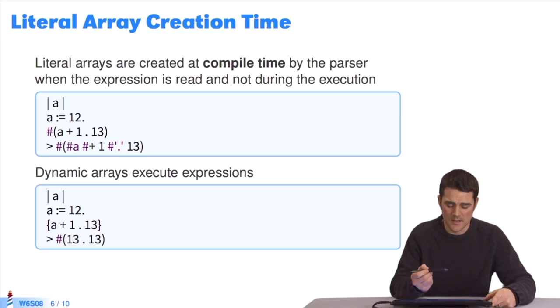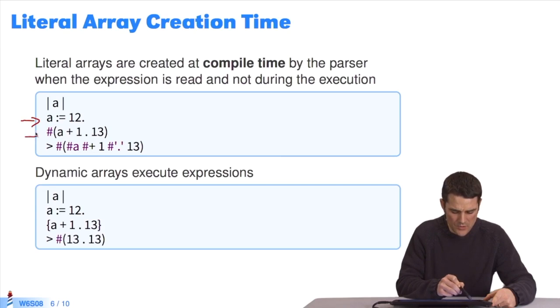The big difference between a literal array and an array created dynamically with braces. If I take the expression, here's an example. I take a variable and initialize it at 12. I want to create an array. Since it's a literal array, I use hashtag parentheses. And I add a plus 1, 13. And it returns this array. It's an array that will contain the symbols a and plus integer 1, symbol period, and integer 13.